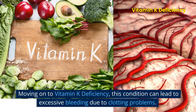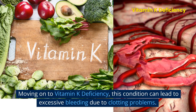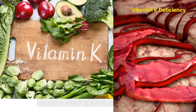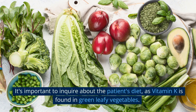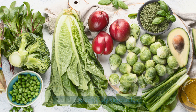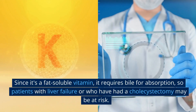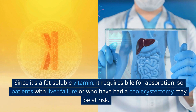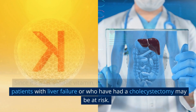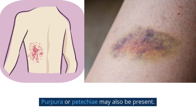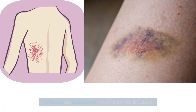Moving on to vitamin K deficiency, this condition can lead to excessive bleeding due to clotting problems. It's important to inquire about the patient's diet, as vitamin K is found in green leafy vegetables. Since it's a fat-soluble vitamin, it requires bile for absorption, so patients with liver failure or who have had a cholecystectomy may be at risk. Purpura or petechia may also be present.